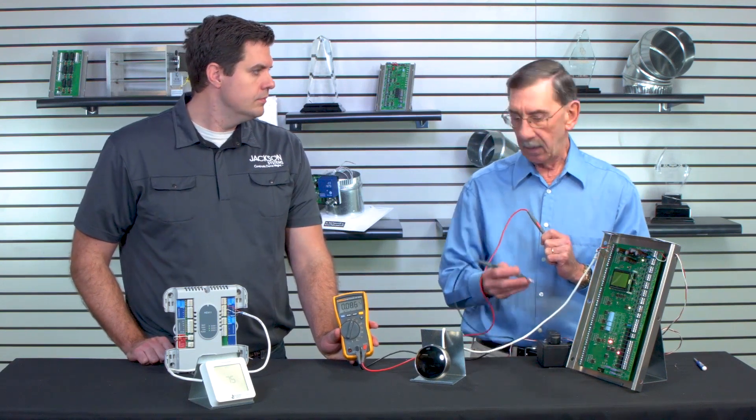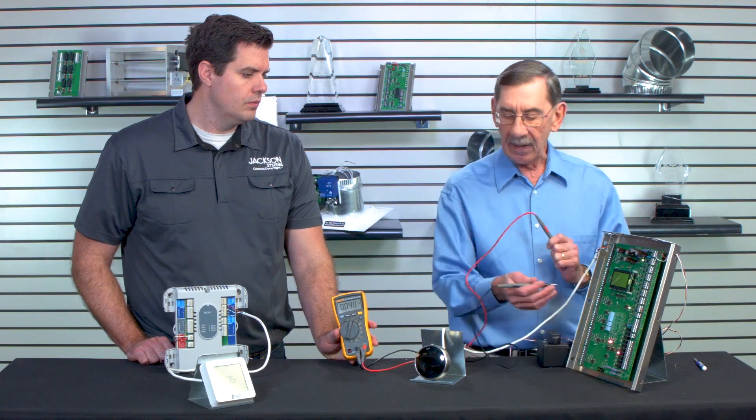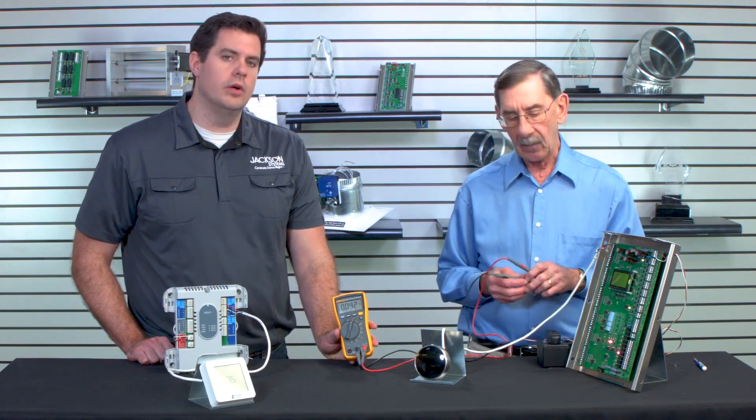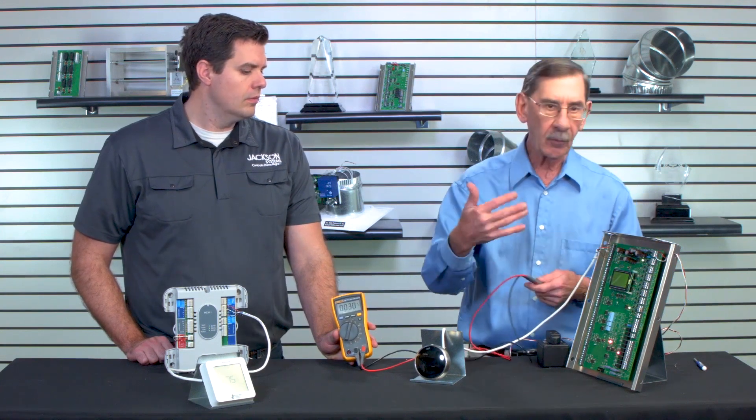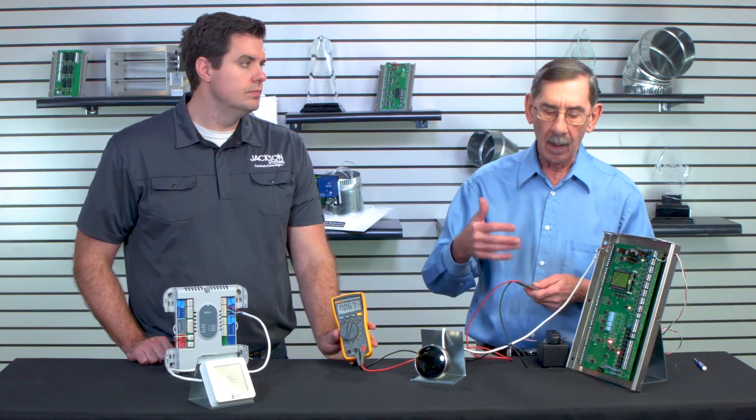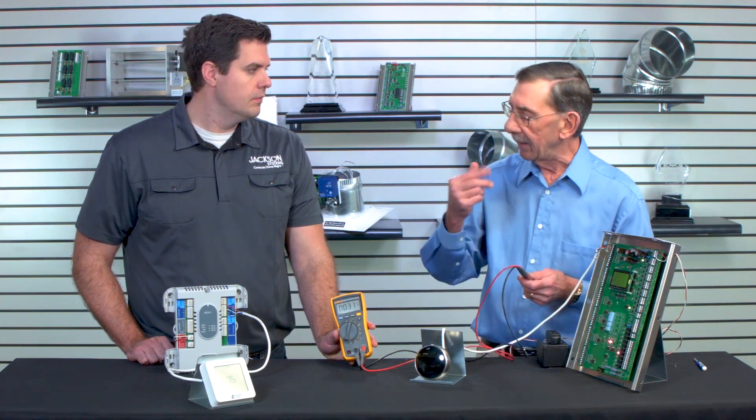Now we've got, we know we've got an input. The panel is telling us that it's received that call. It has energized the output to the equipment. Well, we're not using the equipment transformer to power the panel or the thermostats or even the zone dampers. We use a separate transformer. So all we are over here again is a switch.